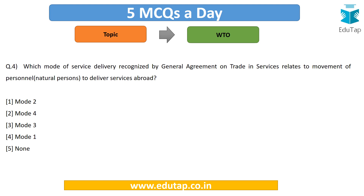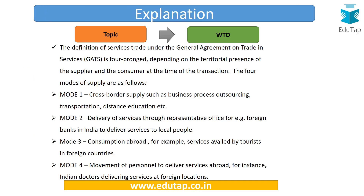Which mode of service delivery recognized by GATS — the General Agreement on Trade in Services — relates to movement of personnel, that is natural persons, to deliver services abroad? Is it Mode 2, Mode 4, Mode 3, or Mode 1? The correct answer is option number 2 — Mode 4. The definition of services given in GATS is four-pronged and depends on the territorial presence of the supplier and consumer at the time of the transaction.